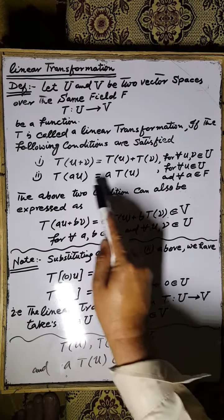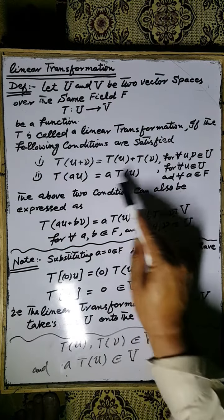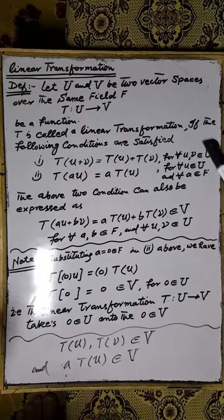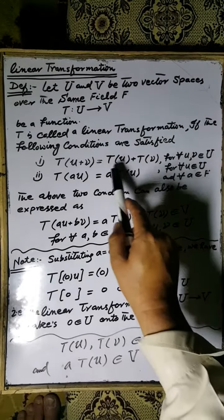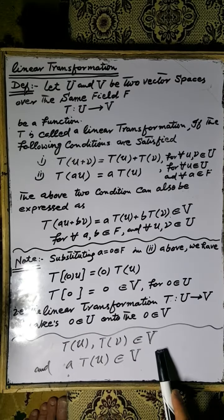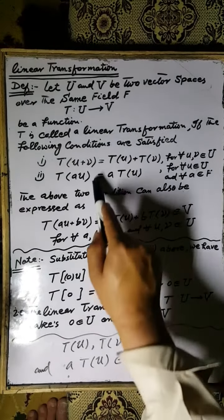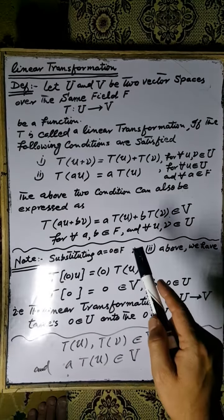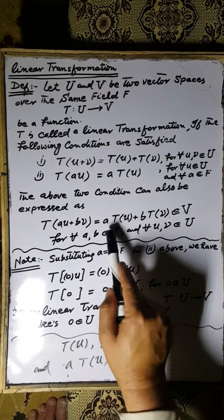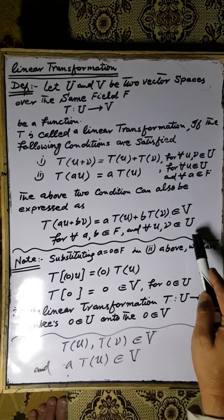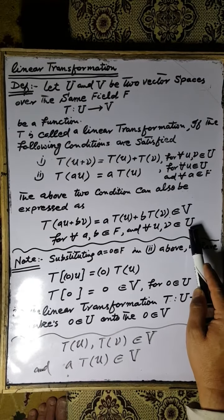The second condition is that T(au) is equal to a·Tu, where a is a scalar and u is an element of the vector space U. These two conditions can be combined and expressed as: T(au + bv) is equal to a·Tu plus b·Tv, for a, b any two scalars and u, v elements of the vector space U.